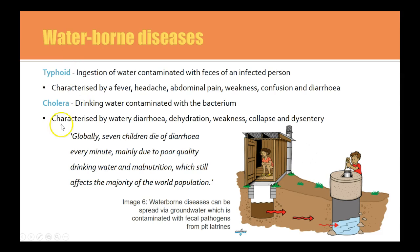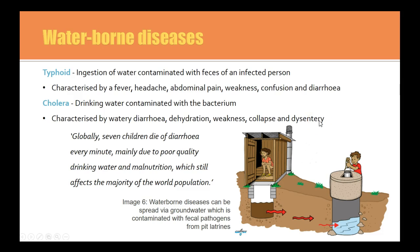Cholera is the other waterborne disease — drinking water contaminated with bacteria, which is a bit different. Symptoms include diarrhoea, dehydration, weakness, collapse and dysentery. Again, another poverty or hunger cycle that keeps people sick, so they can't provide for themselves or their family.